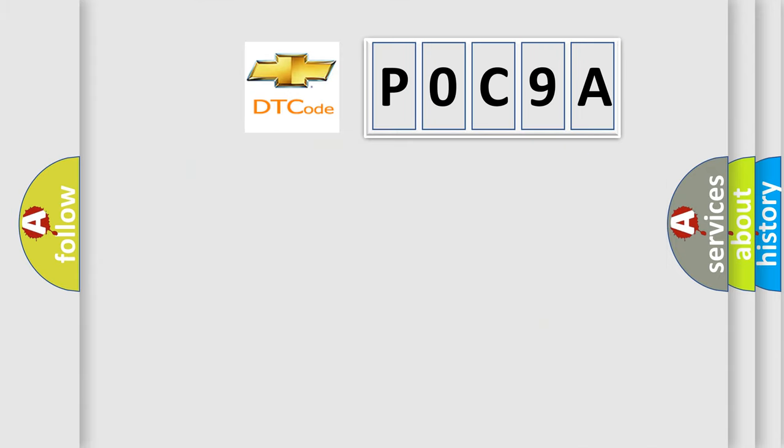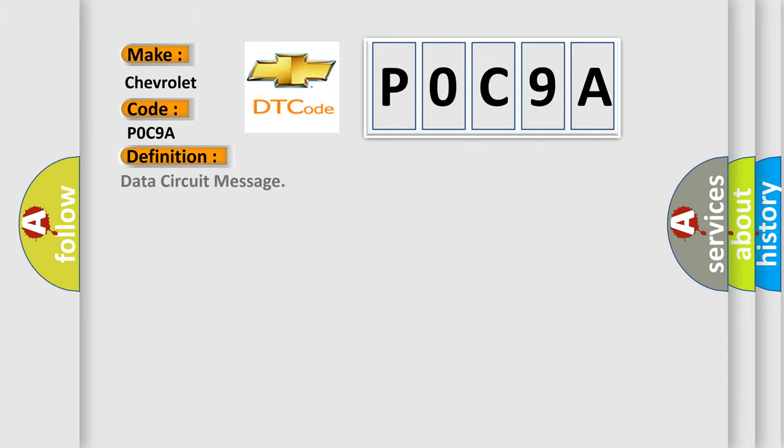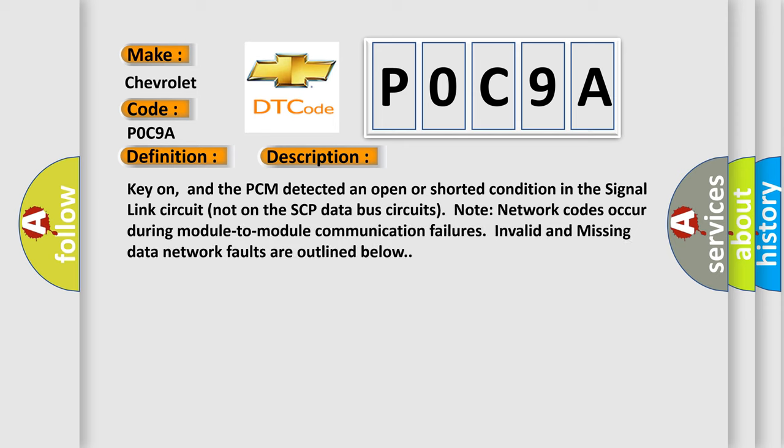So, what does the Diagnostic Trouble Code P0C9A interpret specifically for Chevrolet car manufacturers? The basic definition is Data circuit message. Here is a short description of this DTC code. Key on, and the PCM detected an open or shorted condition in the signal link circuit, not on the SCP data bus circuit.